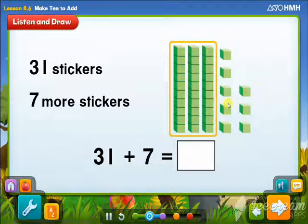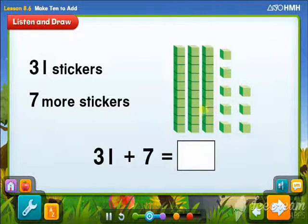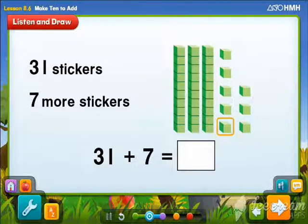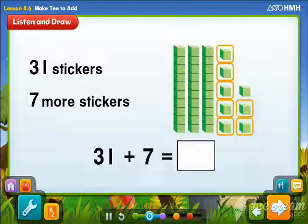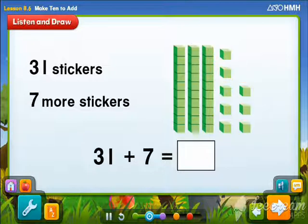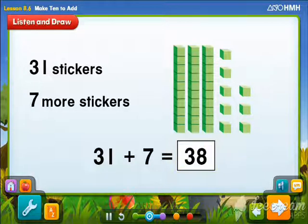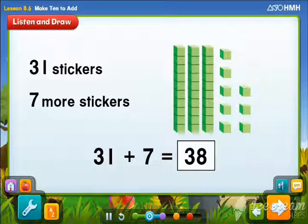There are 3 tens. Count to find the total number of ones. 1, 2, 3, 4, 5, 6, 7, 8. 3 tens and 8 ones are shown. What is the sum? 31 plus 7 is equal to 38. So, Sally has 38 stickers now.